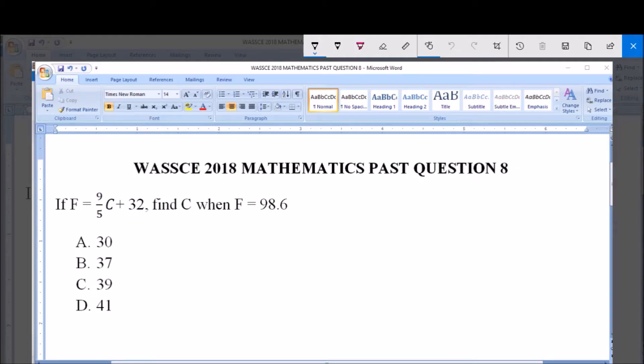WASSCE 2018 Mathematics Past Question 8. If F is equal to 9/5 C plus 32, find C when F is equal to 98.6. A: 30, B: 37, C: 39, and D: 41.